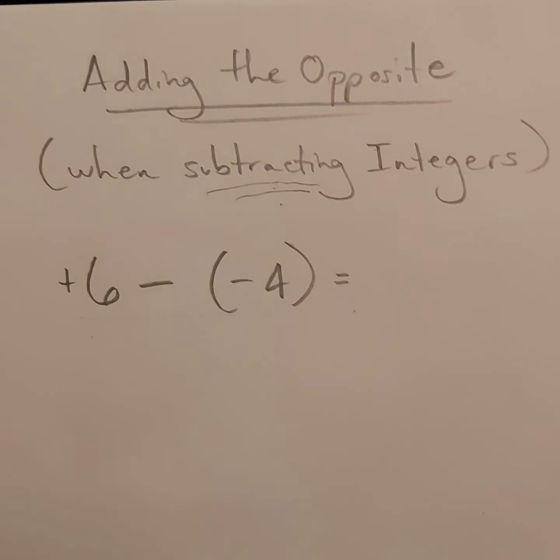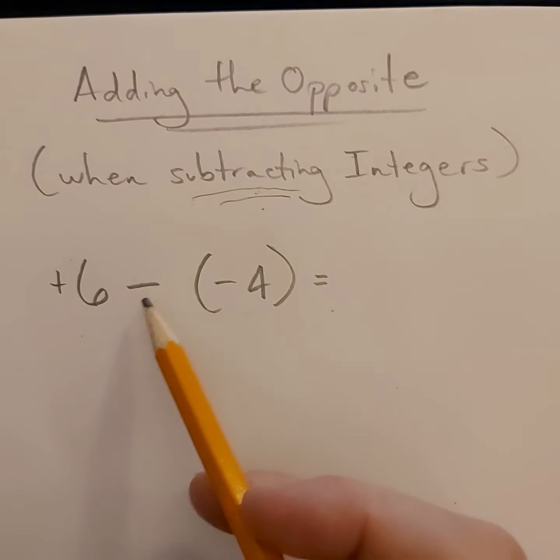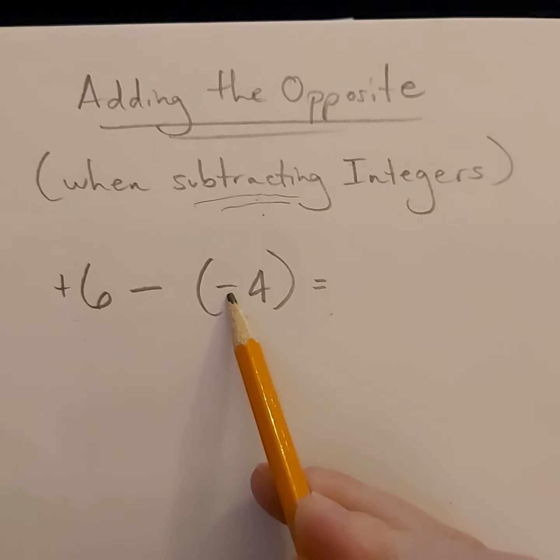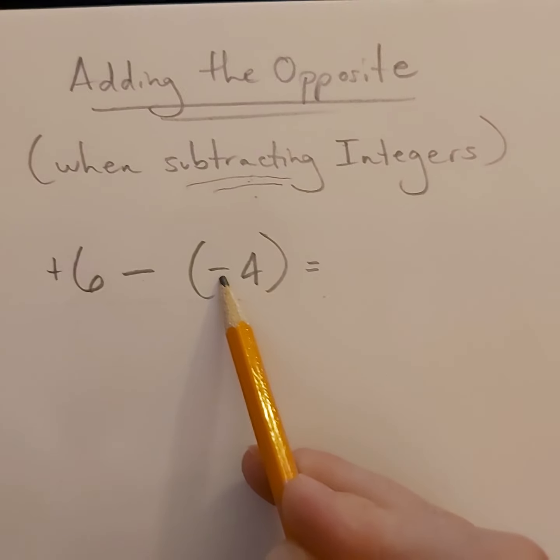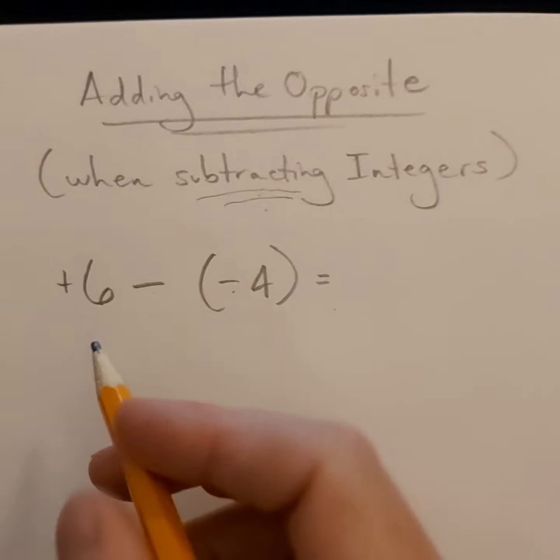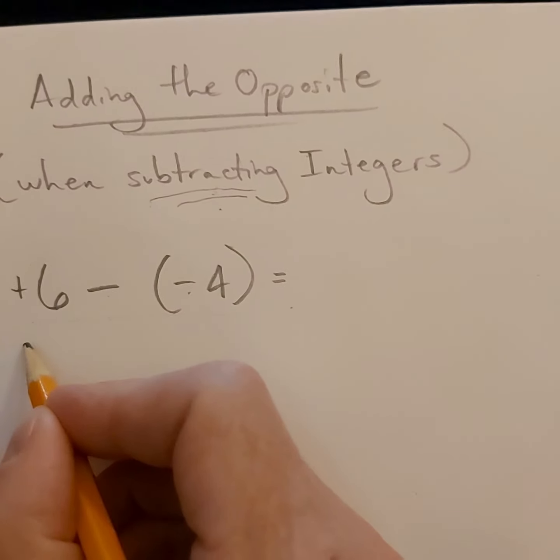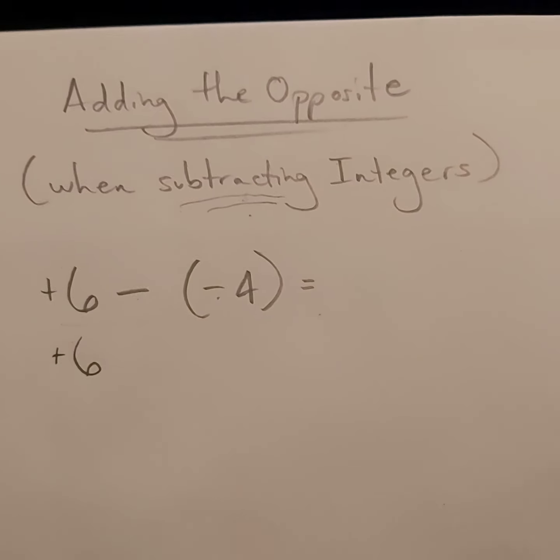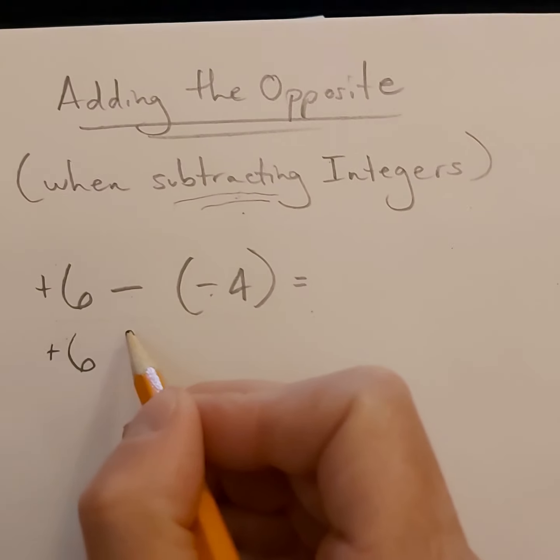However, sometimes it's easier to just flip the sign and flip the sign of the second number in the math sentence. So I'm gonna rewrite it now, but I'm gonna keep the first number exactly the same. Positive six is not gonna change.